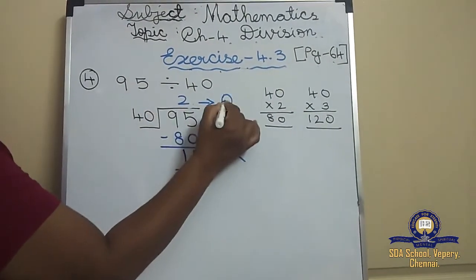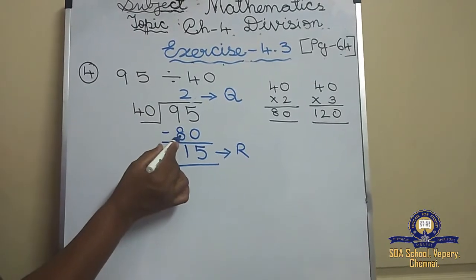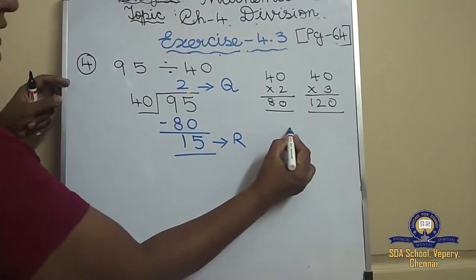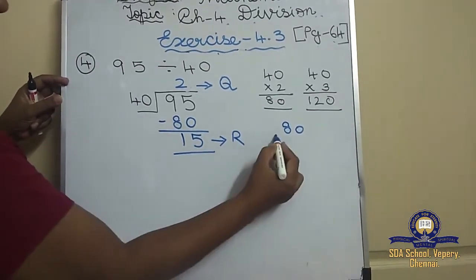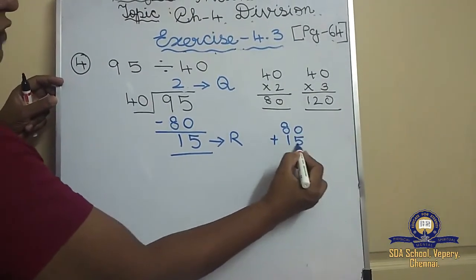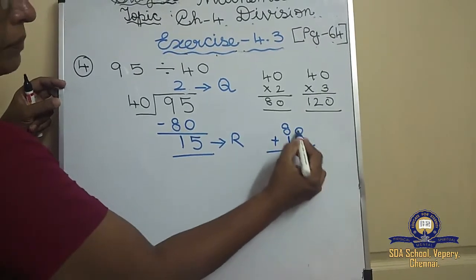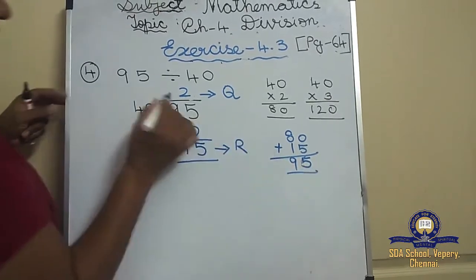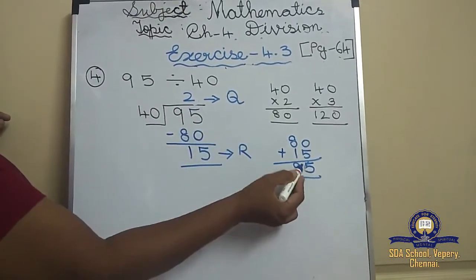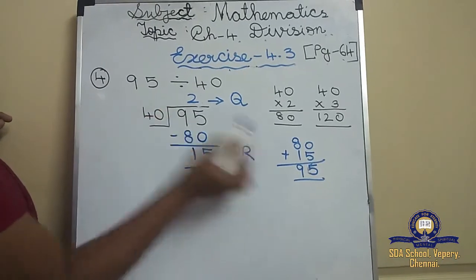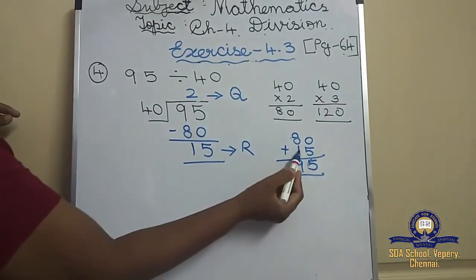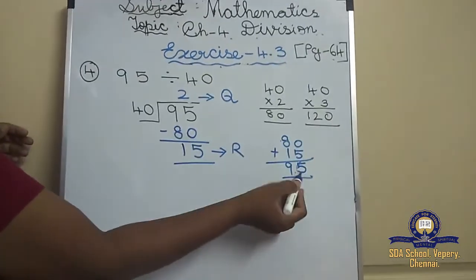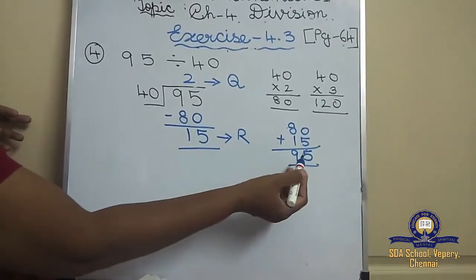To check: 40 twos are 80. Add the remainder 15 — 5 plus 0 is 5, 5 plus 0 is 5, 8 plus 1 is 9. See, the answer 95 has come back. If you want to check your answer, you can verify this way — it will be very easy.